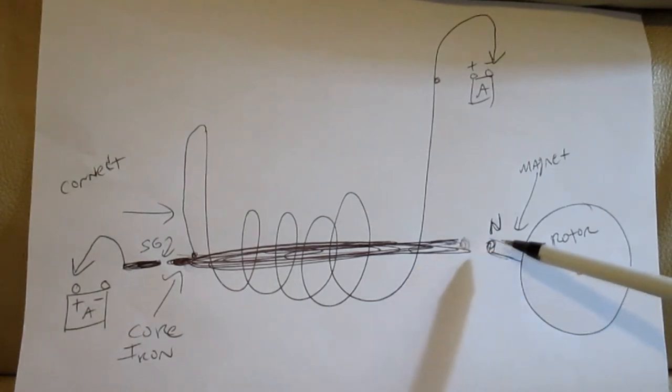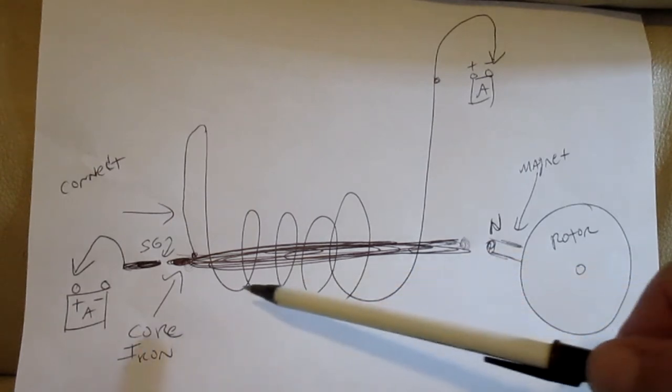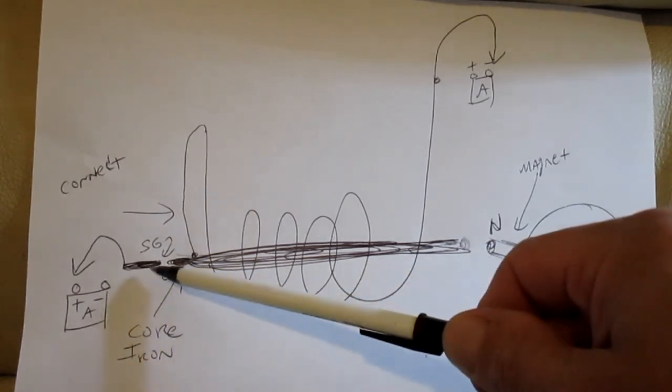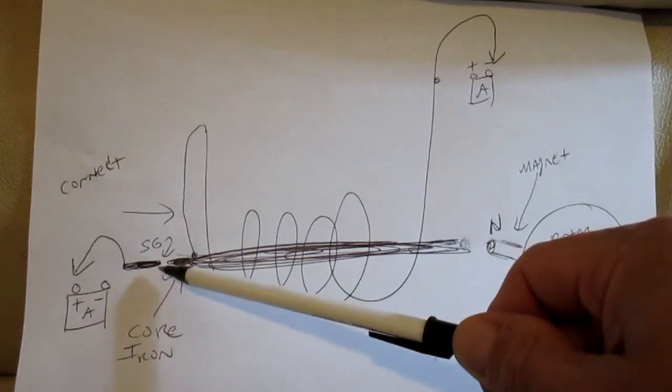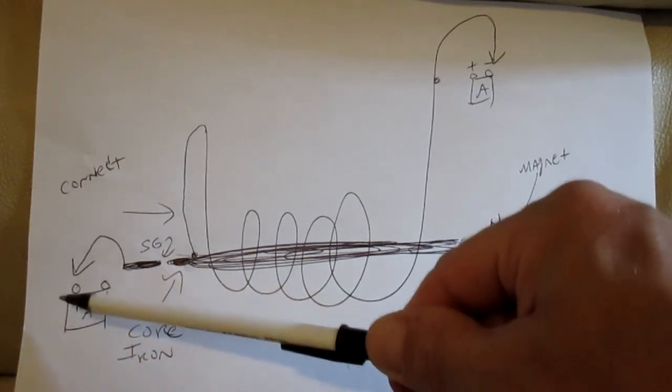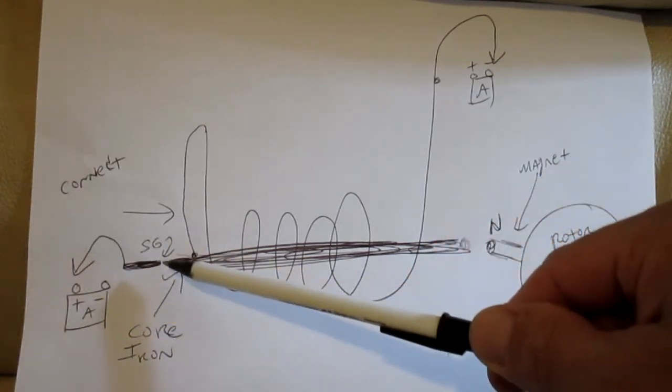...does pass this north magnet on a rotating rotor, when it passes this core (assuming that it works), it induces some kind of a flux field that then attracts the positive voltage to jump across the spark gap.